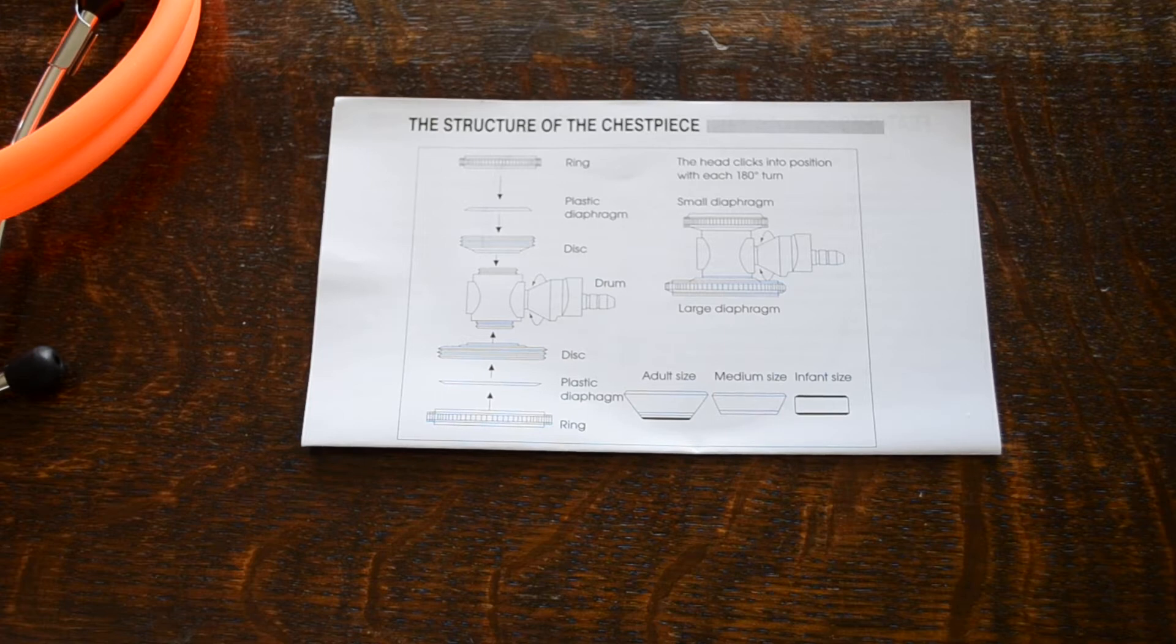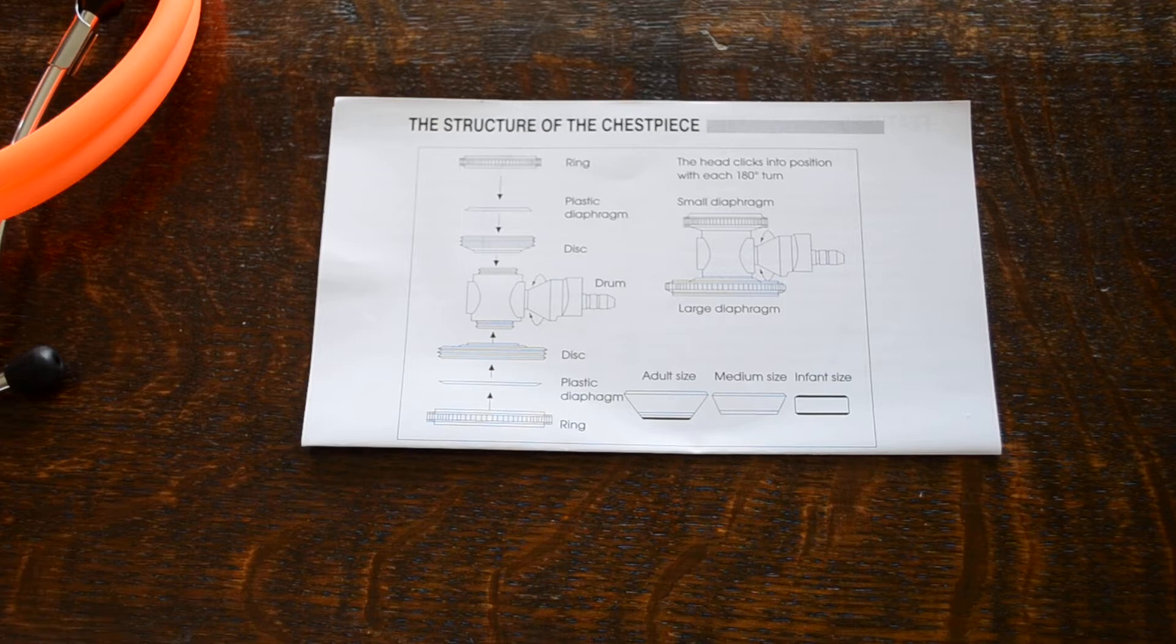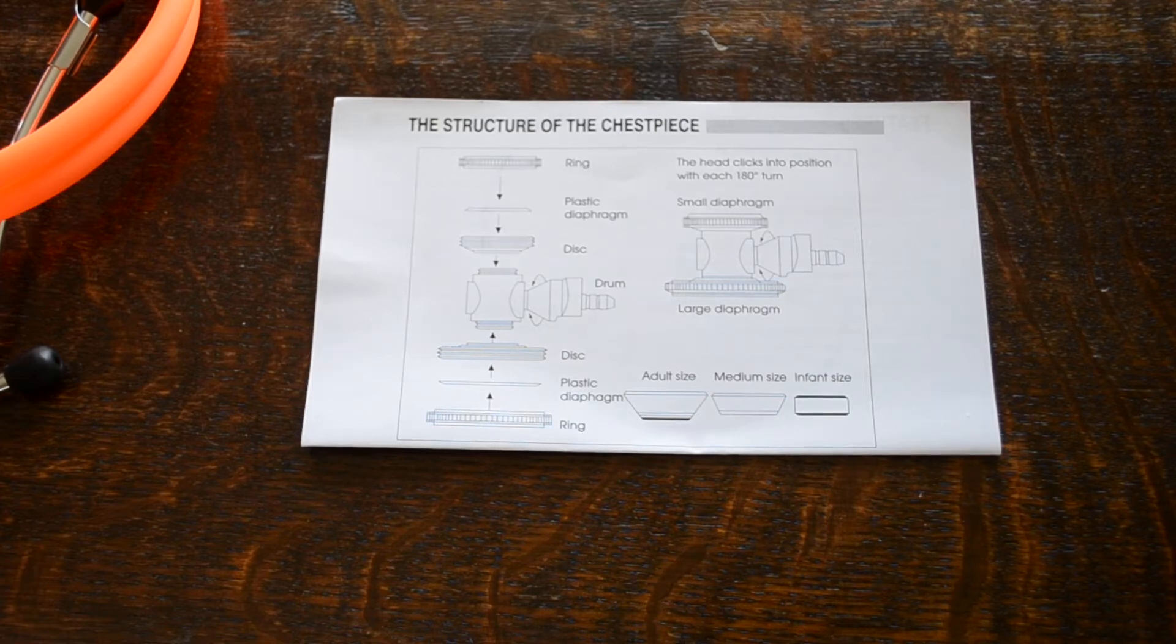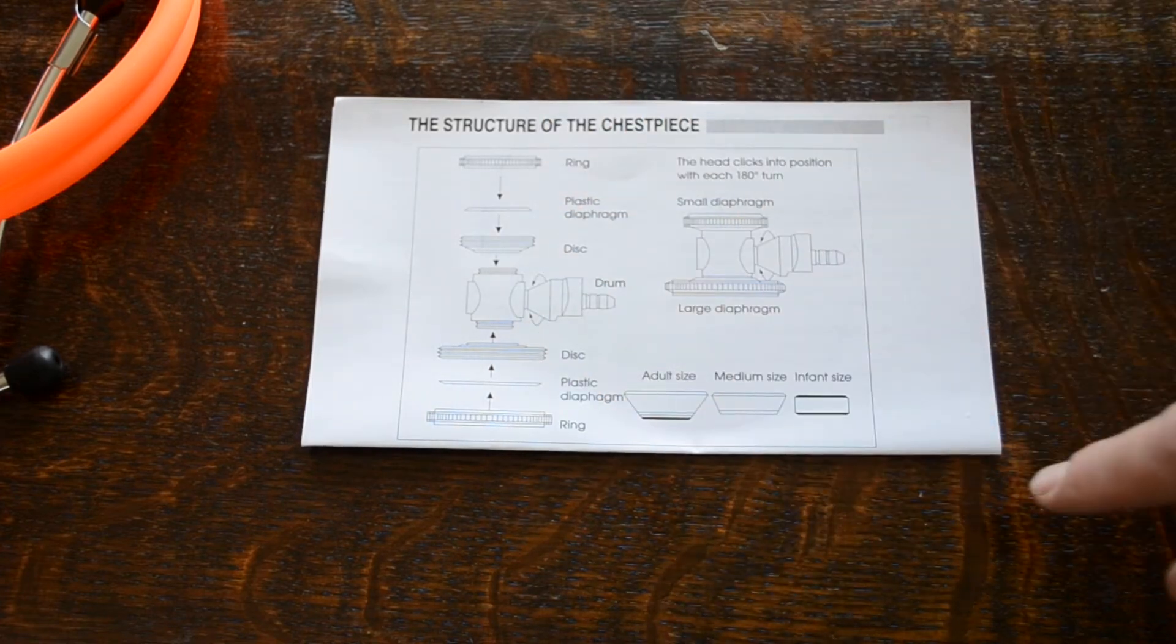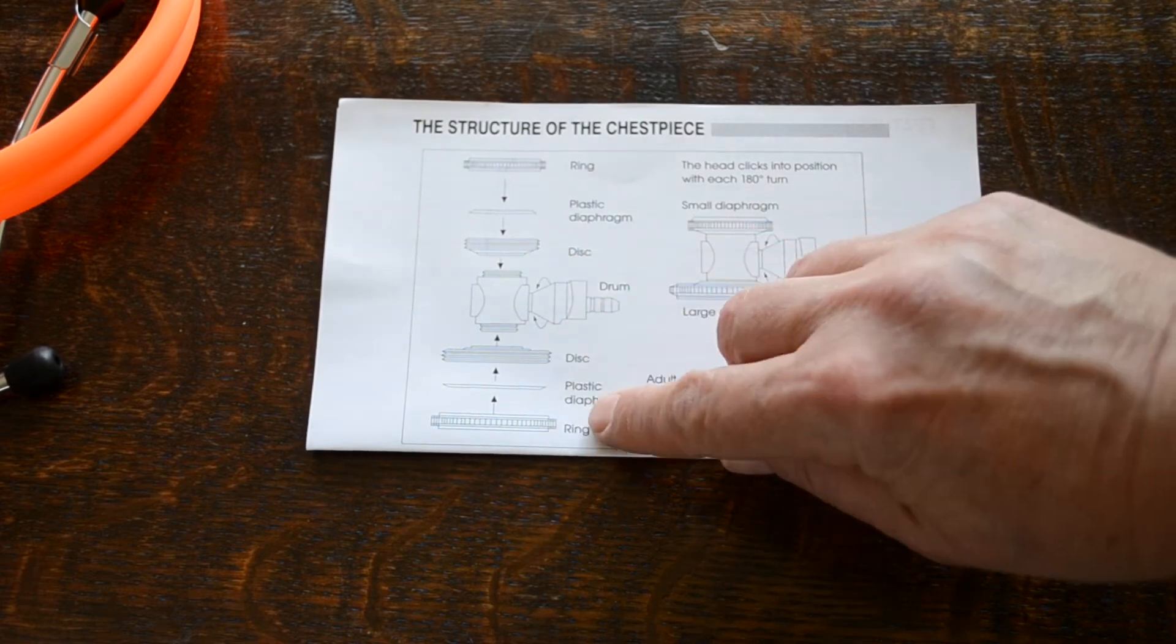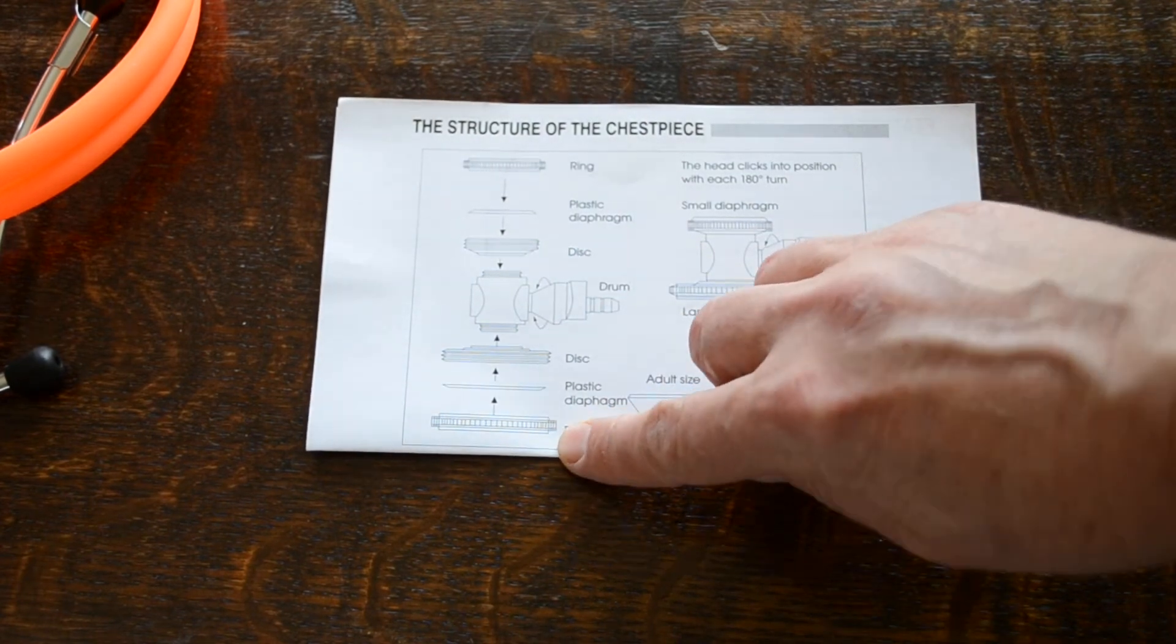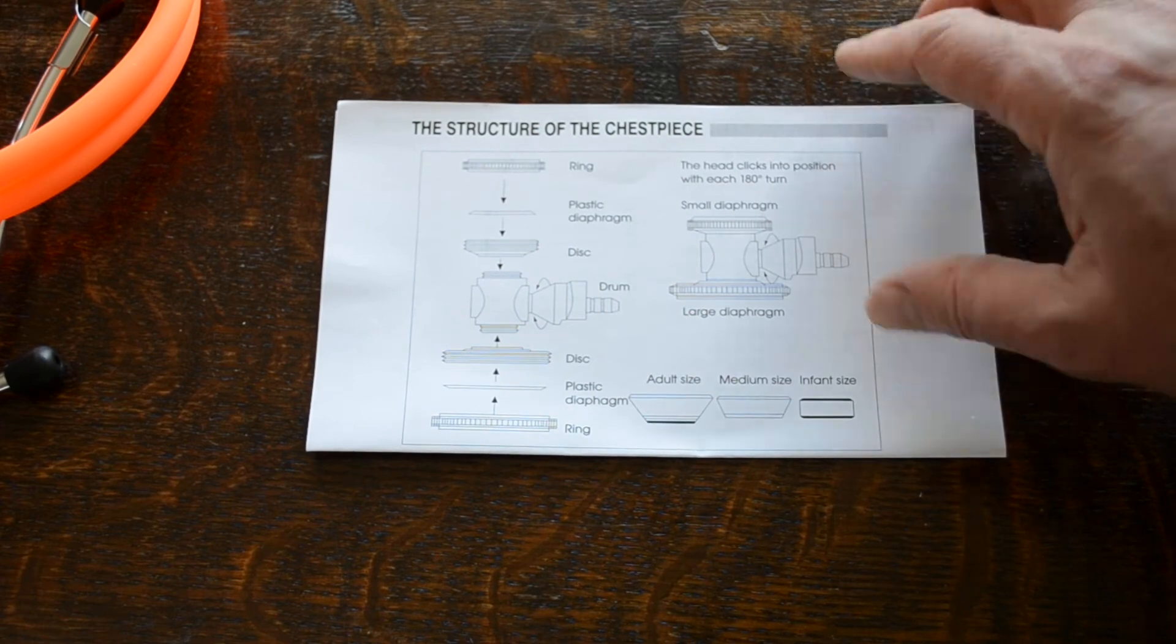As I said, you can have it with diaphragm in the pediatric and diaphragm in the neonate setting. You can have a bell neonate. You can have a bell adult and a bell pediatric setting. And this basically just shows you how to align all the discs and the diaphragms and the diaphragm retention rings on the various settings.